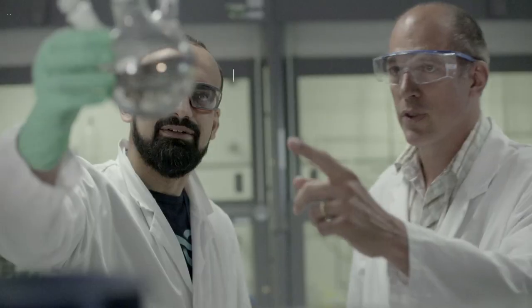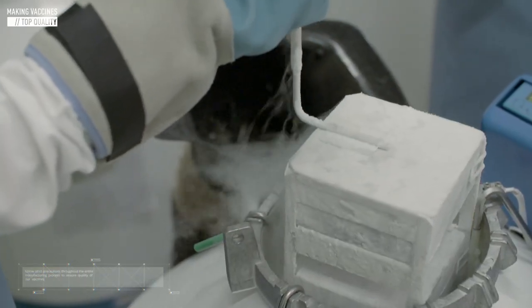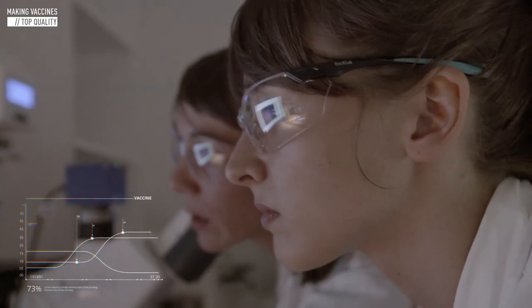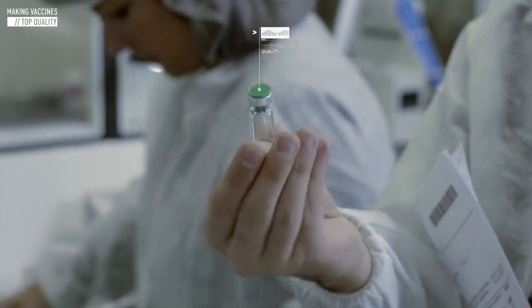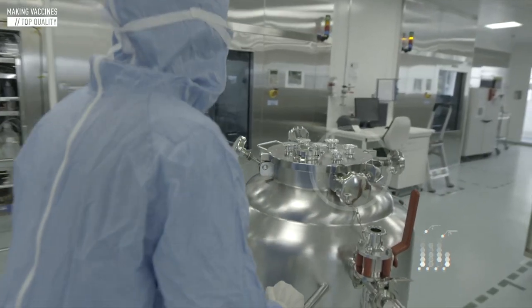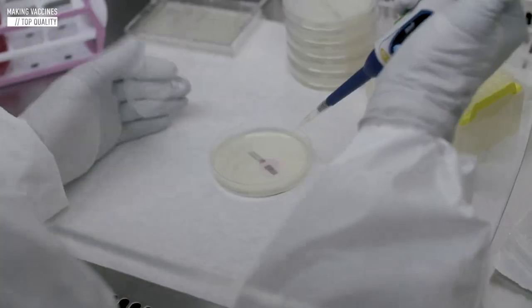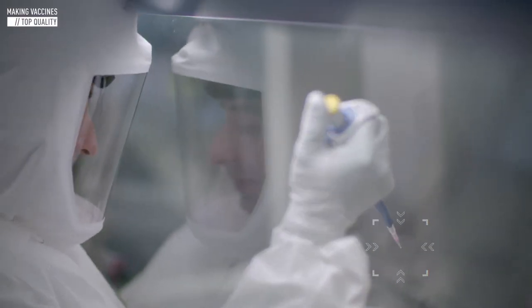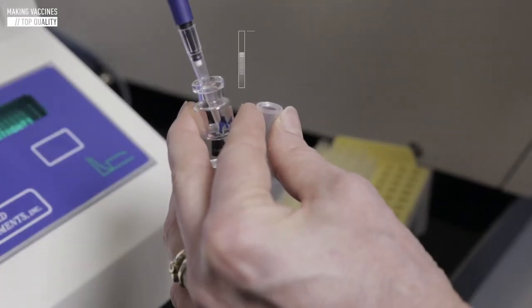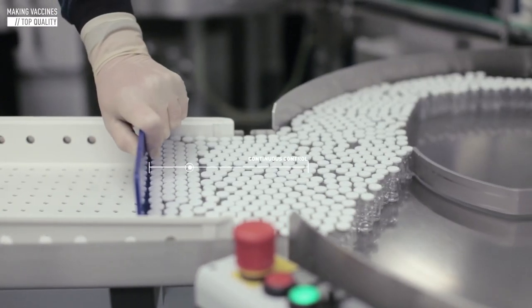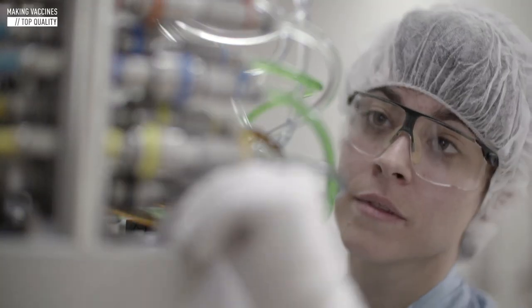Sanofi Pasteur takes care to follow strict precautions throughout the entire manufacturing process to ensure the quality of our vaccines. Production takes place in absolutely sterile conditions. Even the atmosphere is purified. Continuous control along the production chain also ensures that raw materials, equipment and manufacturing processes, and the finished product are of the highest quality.